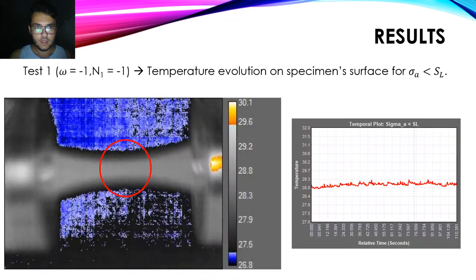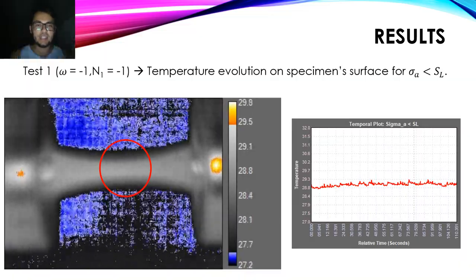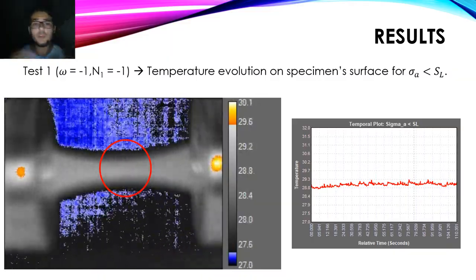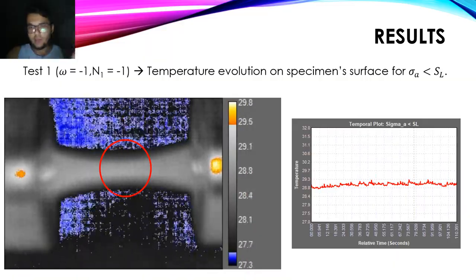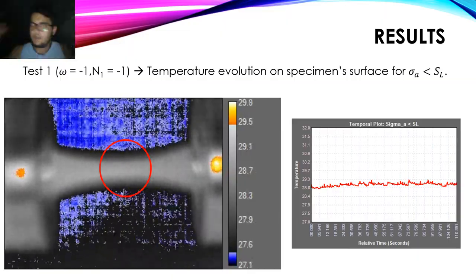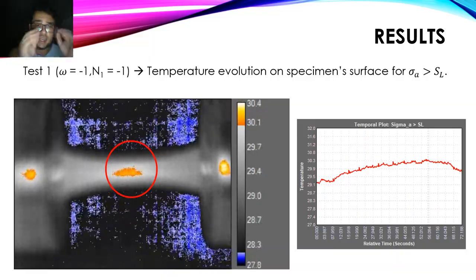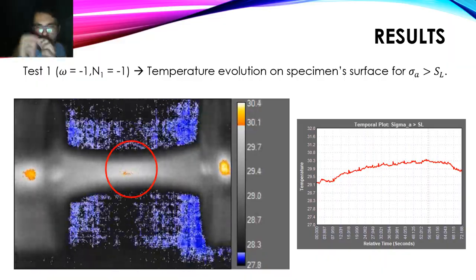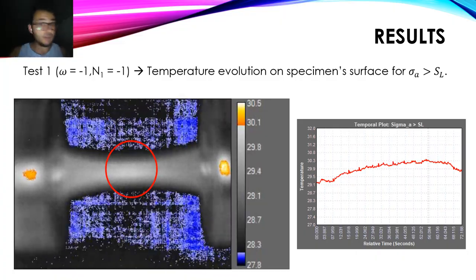Here I would like to share a video from the FLIR camera showing a fatigue test for a stress amplitude lower than the fatigue limit. As we can see, no temperature variation is identified during the test — only elastic variation is observed. Now we can see a test with a stress amplitude higher than the fatigue limit, and after the start of the test, something starts to happen on the specimen surface: a more significant temperature variation appears. This is the result of a fatigue damage process.